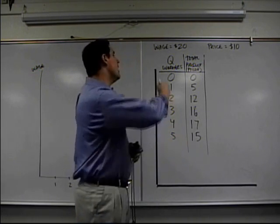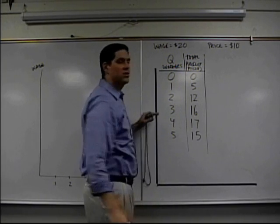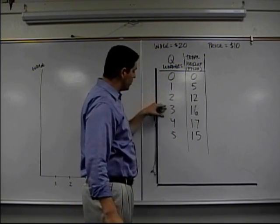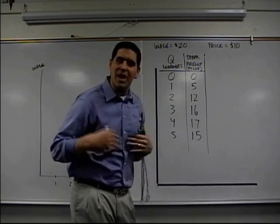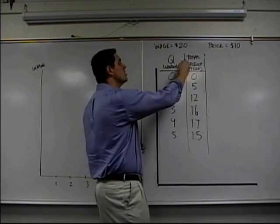So take a look. This is number of workers, this is the output they're producing. So let's say this is no cooks, one, two, three, four, and five different cooks that I'm going to hire for my company.